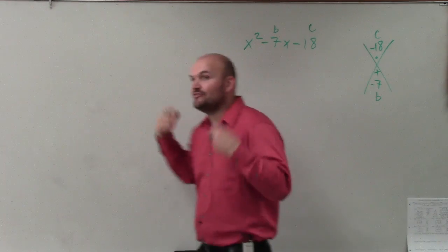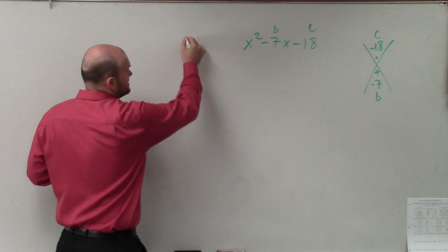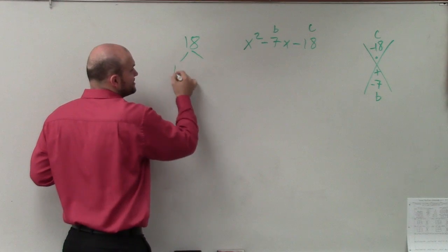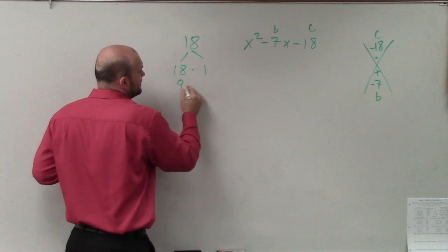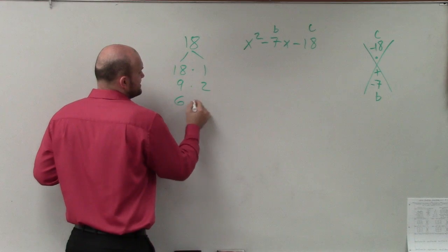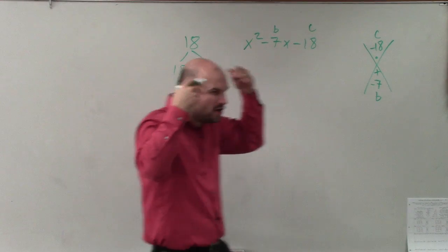So in my head, I'm thinking of all the numbers that multiply to give me 18. And this is what you have to do in your head when you're going to do this mentally. You're going 18 times 1, 9 times 2, 6 times 3. So you think about all those numbers in your head.